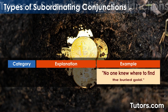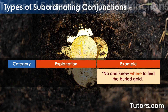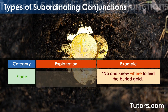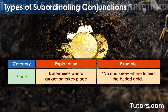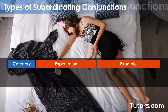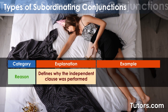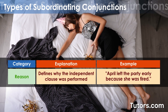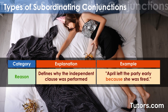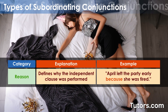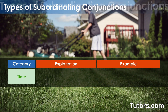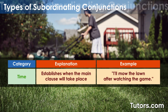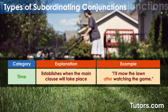The example 'no one knew where to find the buried gold' uses a subordinating conjunction of place, determining where an action takes place. Subordinating conjunctions can also define why the independent clause was performed, as in 'April left the party early because she was tired.' They can also establish when the main clause takes place, like 'I'll mow the lawn after watching the game.'